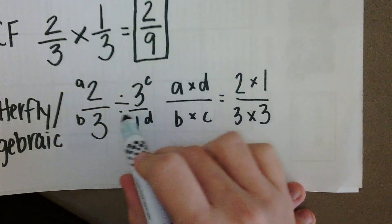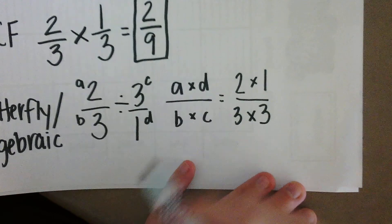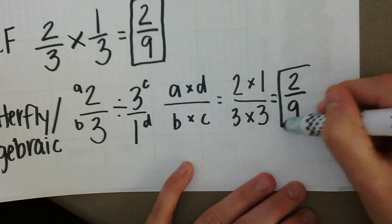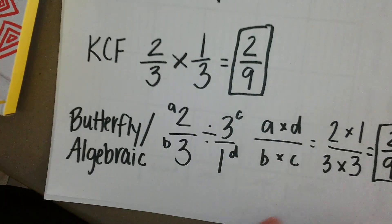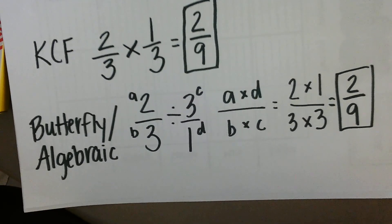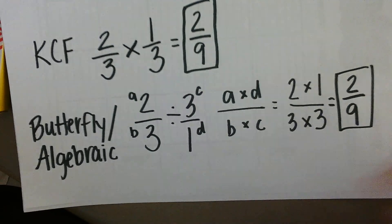We plugged in our number values for our variables, and we are going to get the same exact answer of two-ninths. Either the keep-change-flip method or the butterfly algebraic method are both totally fine.